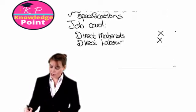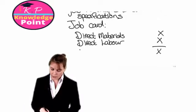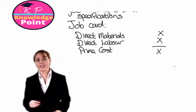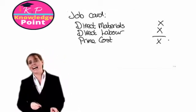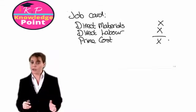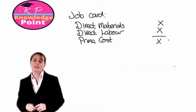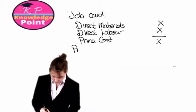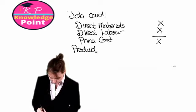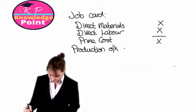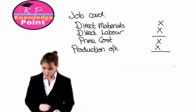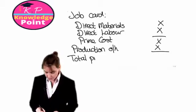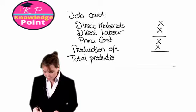Remember that some of our direct costs will give us the prime cost. Once we've calculated the prime cost, we're going to add on some charge for our production overheads, so this will be based on our overhead absorption rates. When we add on our production overheads to the prime cost, this gives us the total production cost of the job.